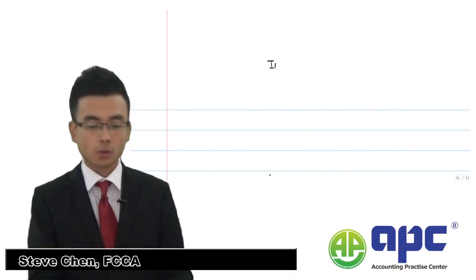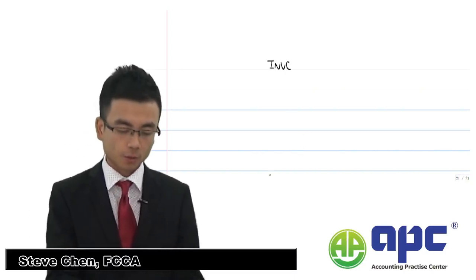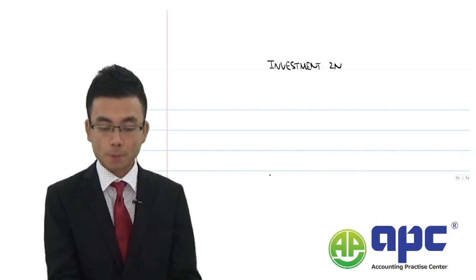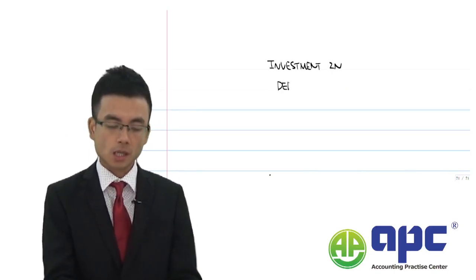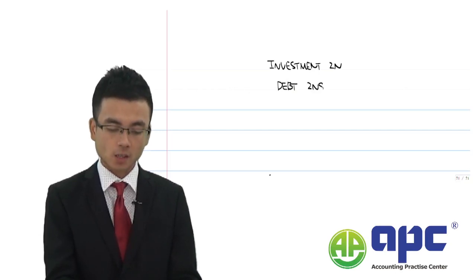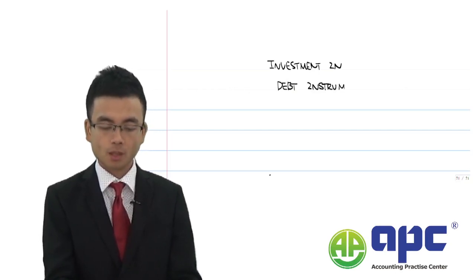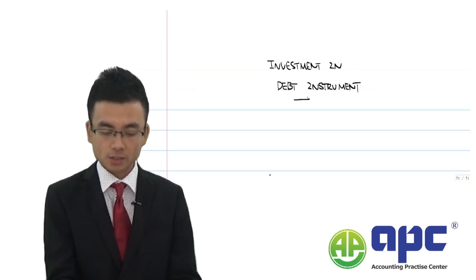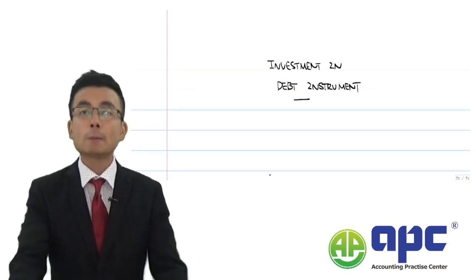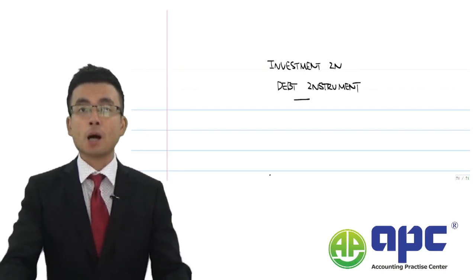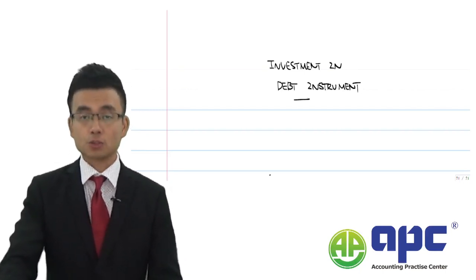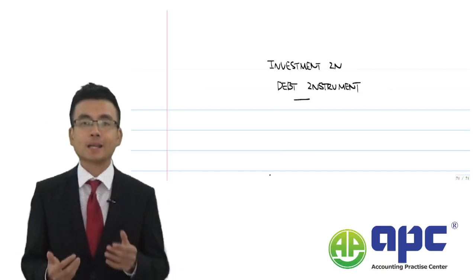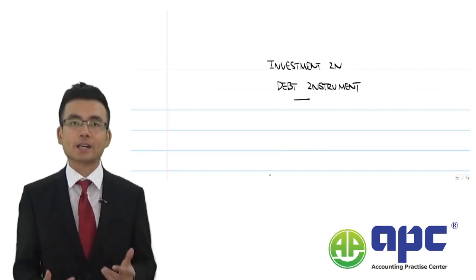Let's look at how we should account for the investment in debt instruments, still from the investor or buyer's point of view. In previous sections we talked about buying shares and how to account for that. But now, if I were to buy debt, the question is why we should buy debt and where should I buy it?